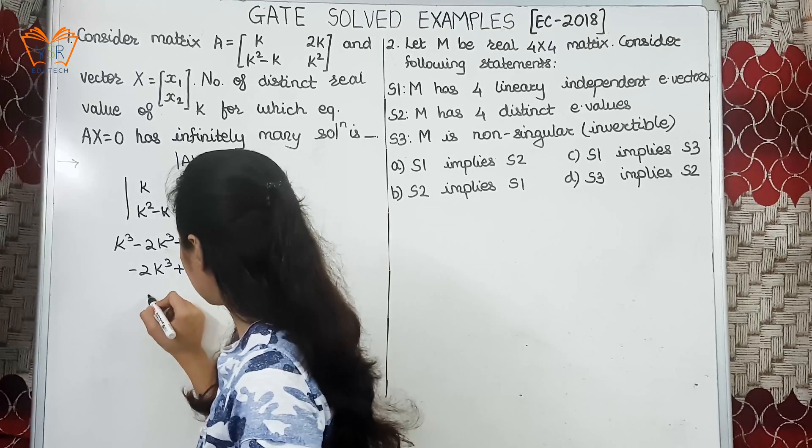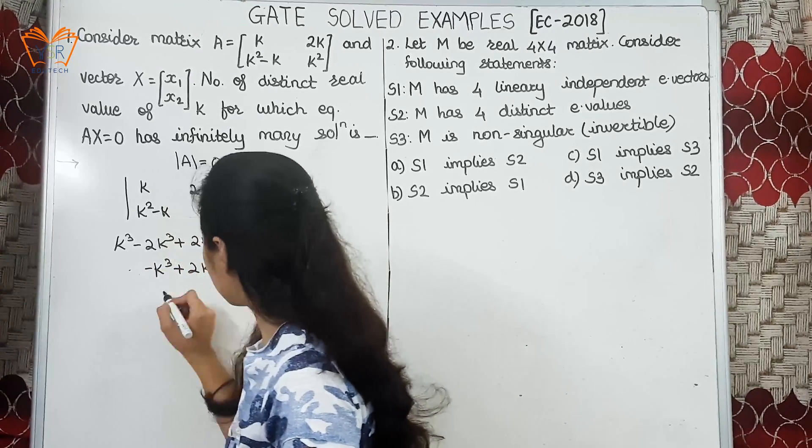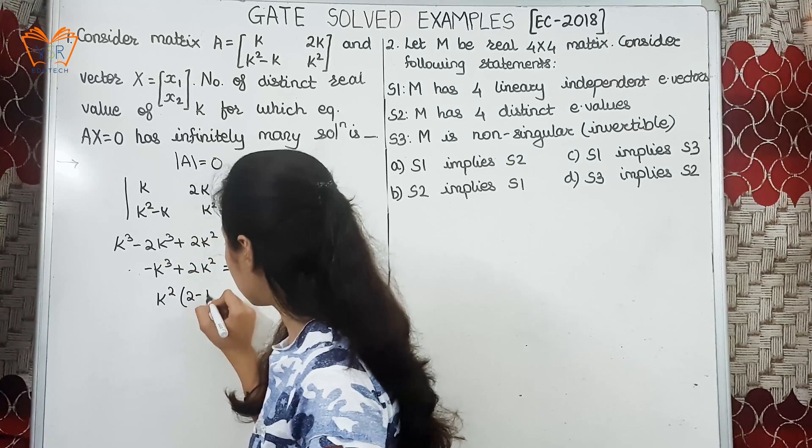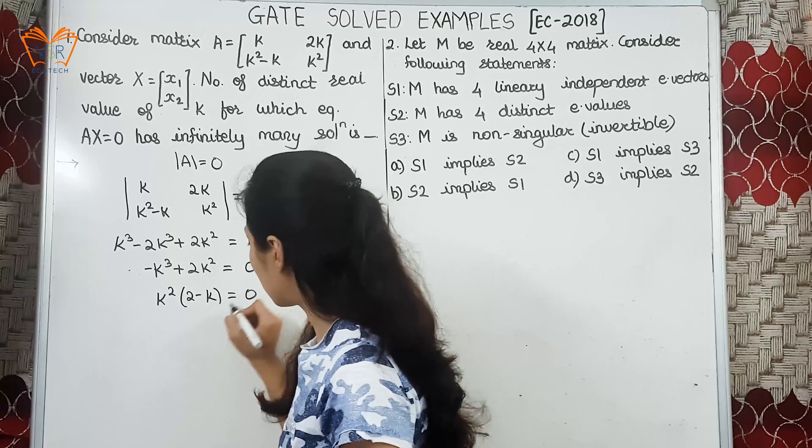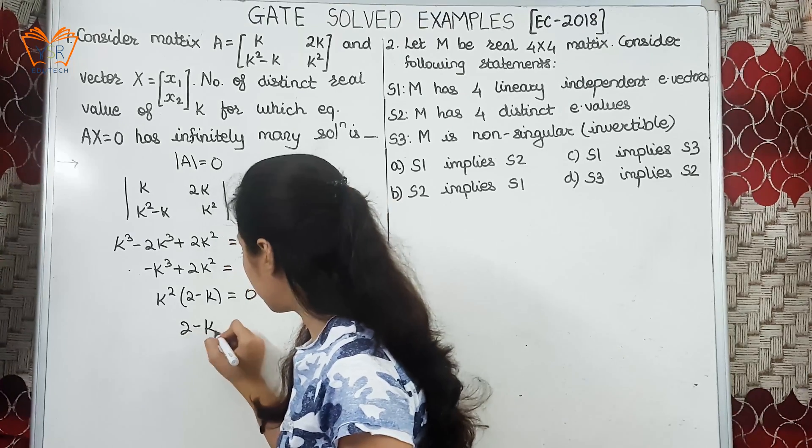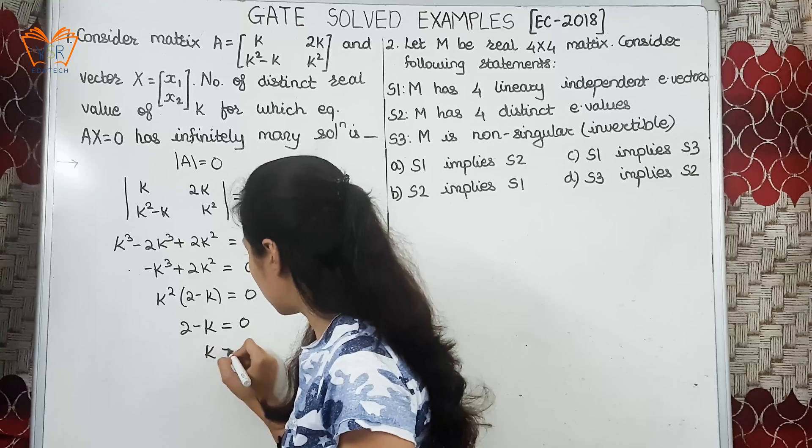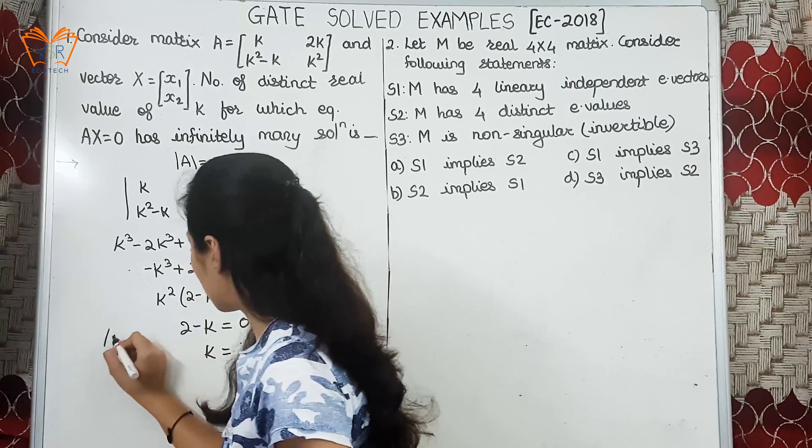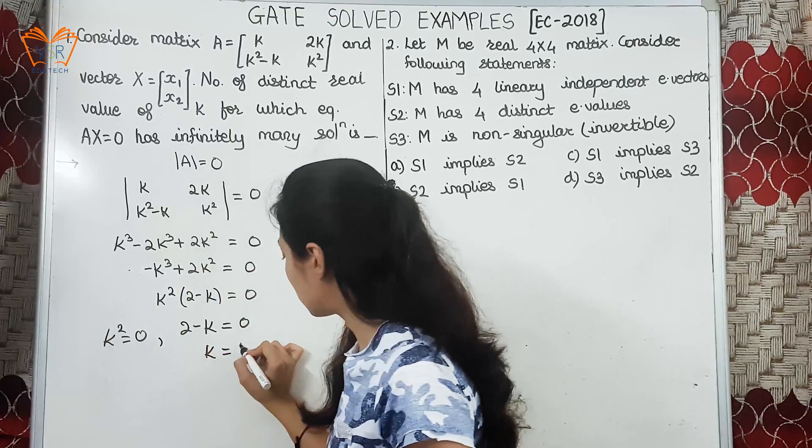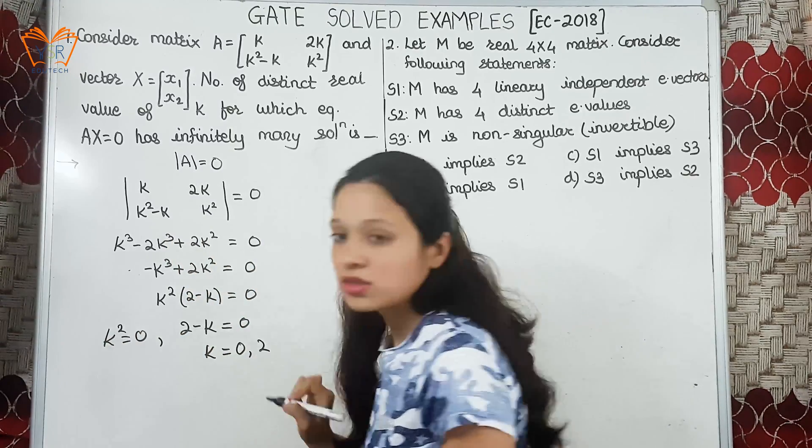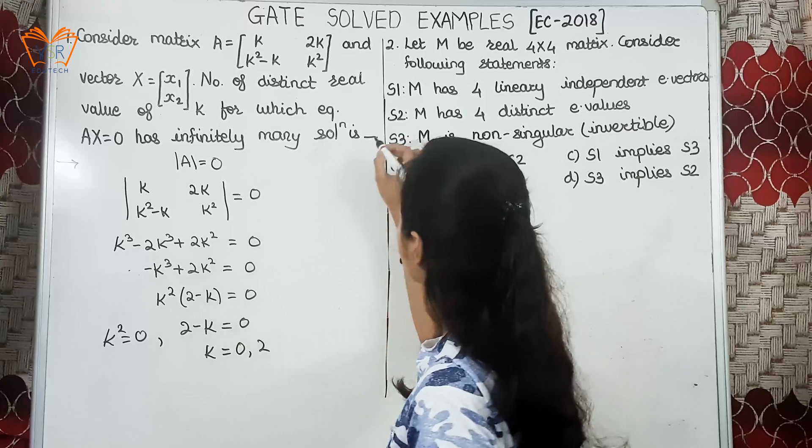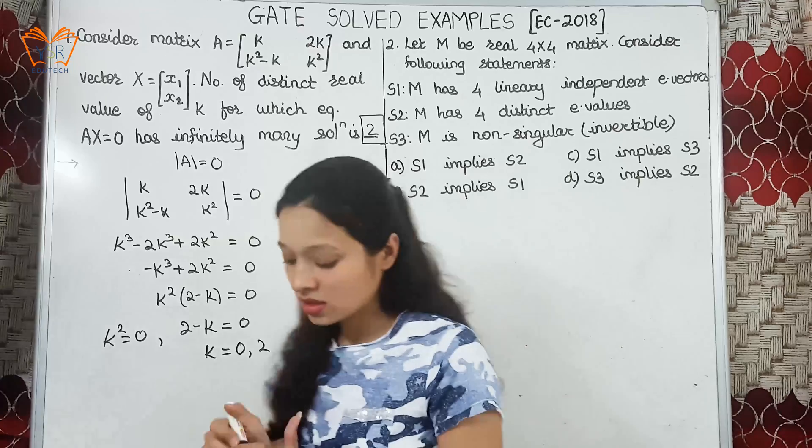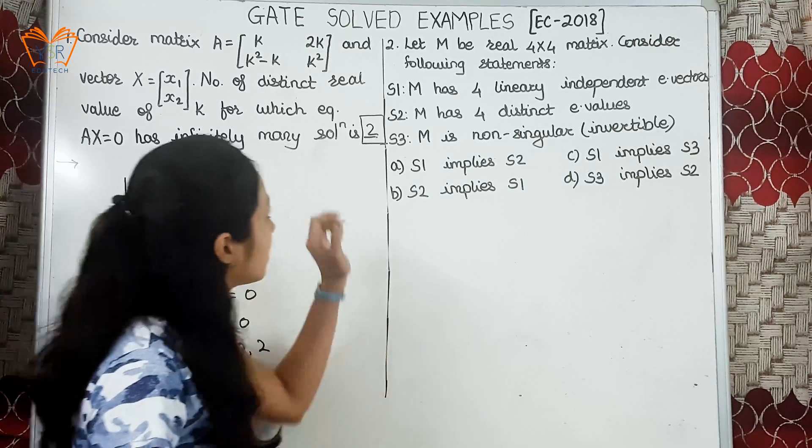This is minus 3k cube, sorry. Let us take k square common, we'll get 2 minus k equal to 0. So value of k will be k square is equal to 0. So value of k will be 0 and 2. So our answer becomes 2. There are two distinct values of k.